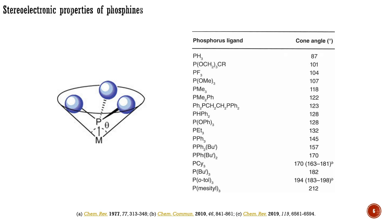Nowadays, to measure a cone angle, you must have an X-ray crystal structure of a gold complex of your ligand. Based on this data, the cone angle is estimated computationally. The modern alternative for the cone angle is called buried volume, which is more frequently used for quantifying the steric bulk in N-heterocyclic carbene ligands.